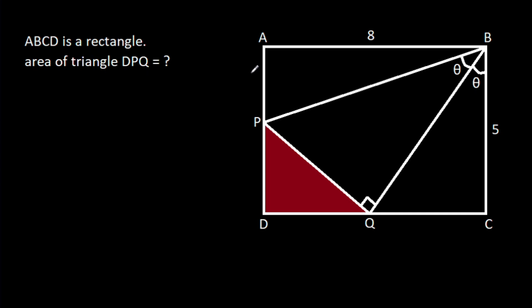In this video, we have been given that ABCD is a rectangle, AB is 8, BC is 5, angle PQB is 90 degrees, angle PBQ is theta, and angle CBQ is theta. We have to find the shaded area.